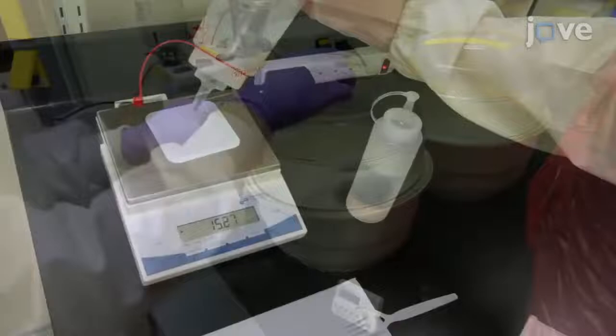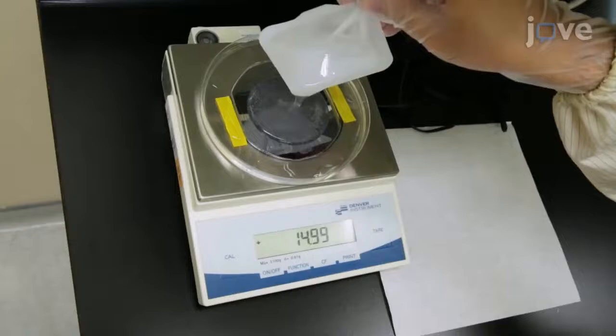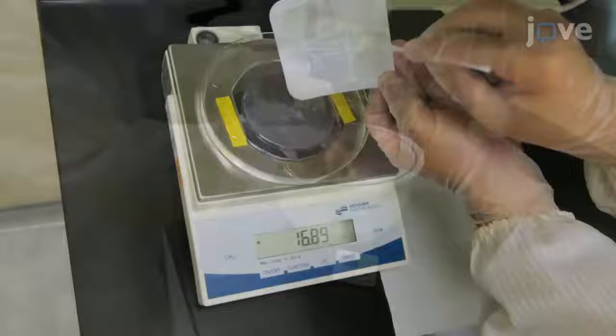Mix the PDMS base and PDMS curing agent at a ratio of 10 to 1, then pour a total of 20 grams of the mixture onto the wafer mold in a 15 cm dish.